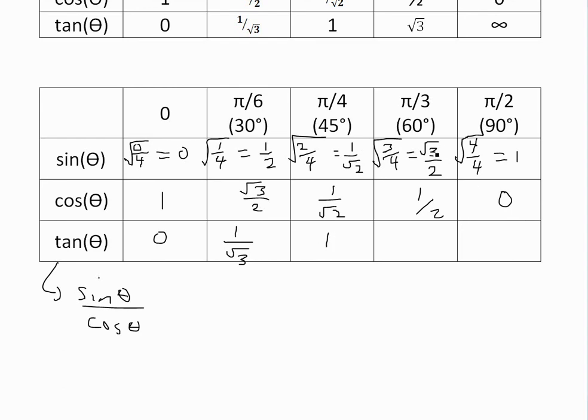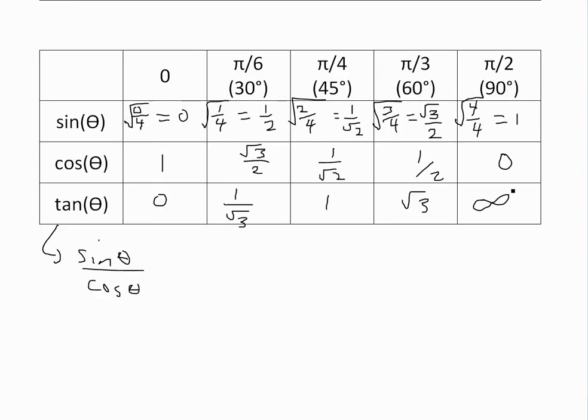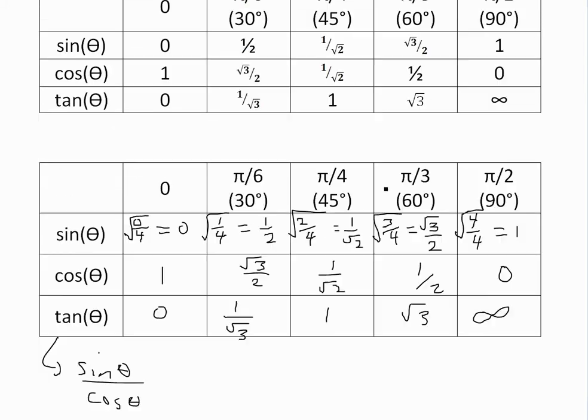This here, √3/2 divided by 1/2, the twos cancel, we're dividing by the same thing, we're left with √3. Now this one, one over zero, one divided by zero is just going to be infinity or not defined because you can't divide by zero, and you know this is basically the same table.